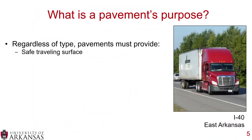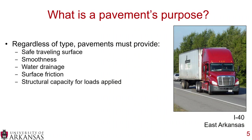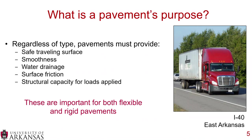Regardless of pavement type, all pavements must provide a safe traveling surface. They must be smooth, allow water to drain off, and provide surface friction between the pavement and tires. Finally, pavements need structural capacity for the loads being applied — whether a WB67 semi-truck or a regular passenger car. These requirements apply to both flexible and rigid pavements.